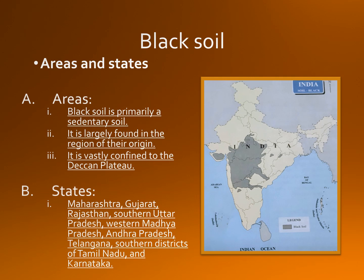Black soil is mostly confined to the Deccan Trap. It is the derivative of trap lava and is spread mostly across interior Gujarat, Maharashtra, Karnataka, and Madhya Pradesh under the Deccan Lava Plateau and Malwa Plateau, where there is both moderate rainfall and underlying basaltic rock. You can take it as a snapshot for your reference for map pointing.